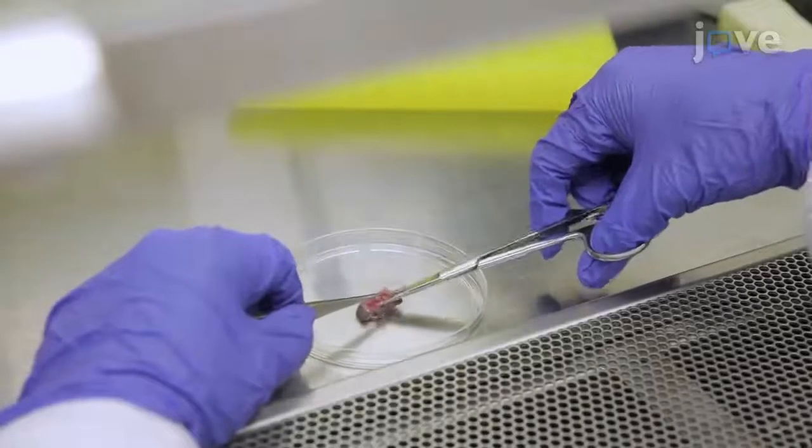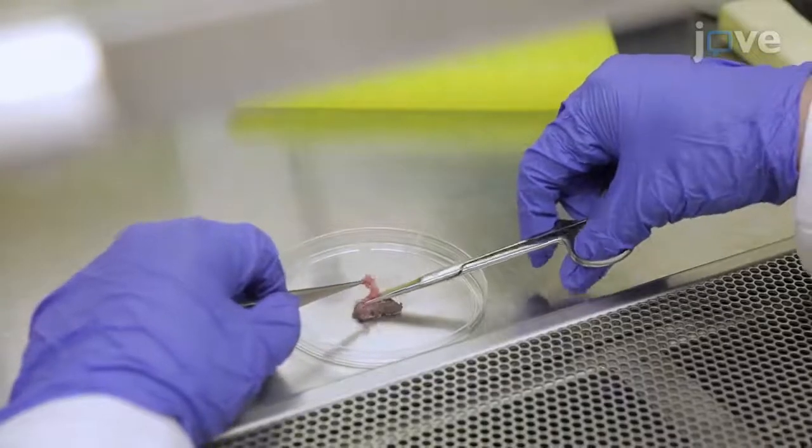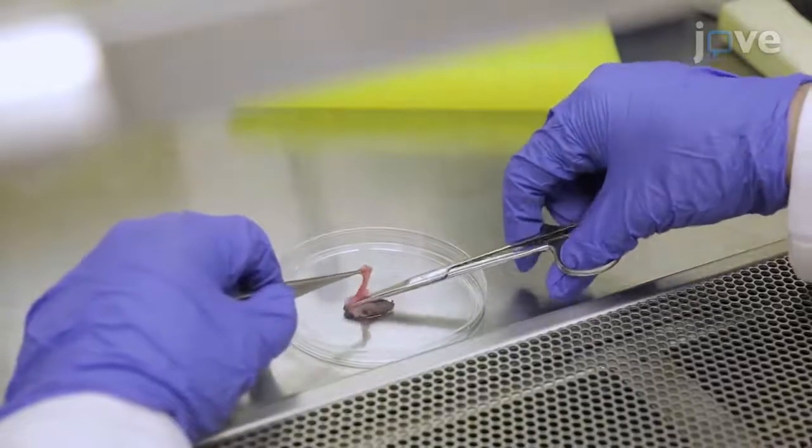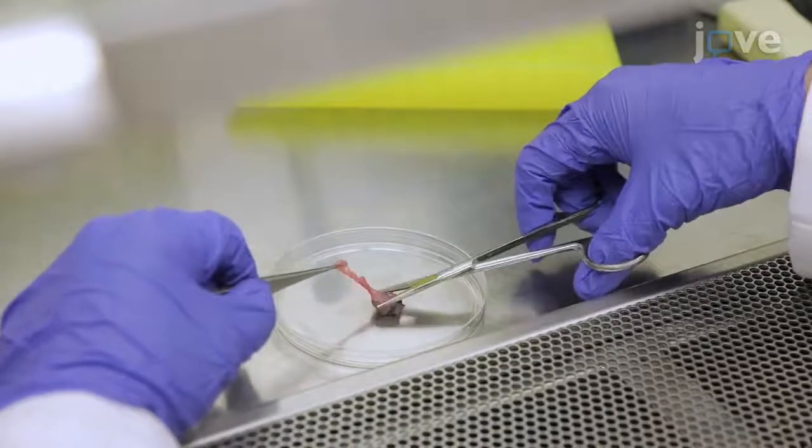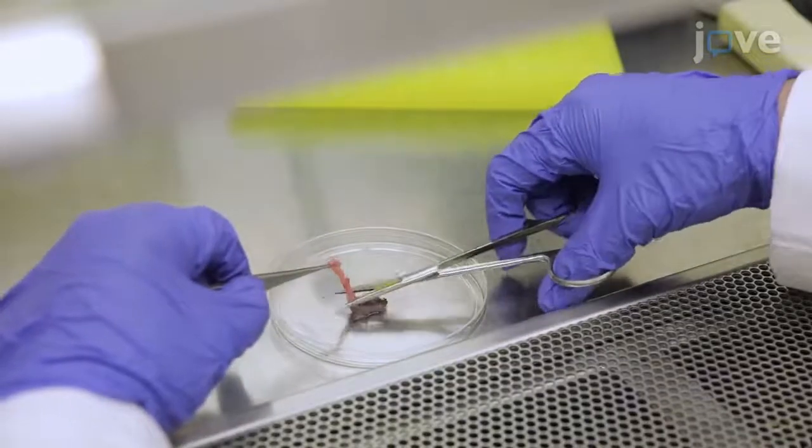To begin, use a pair of scissors to trim the fat and subcutaneous tissue off of the human neonatal foreskin. Cut the skin sample in halves or quarters.